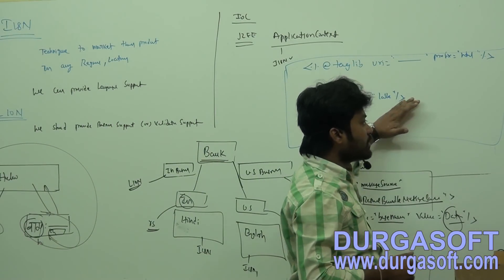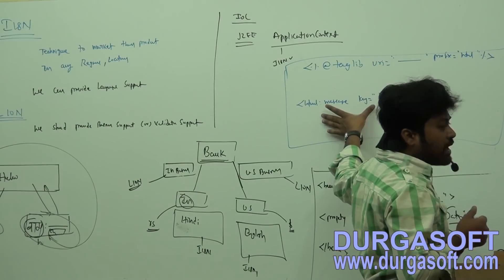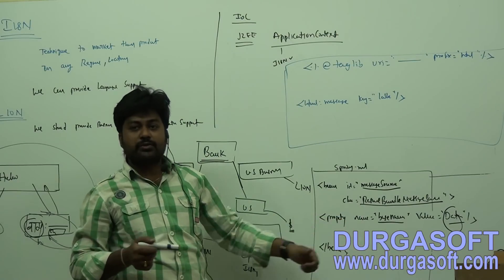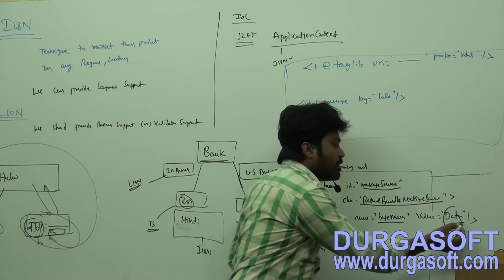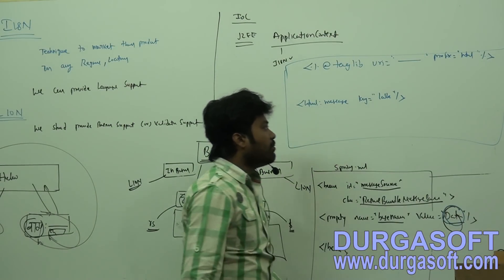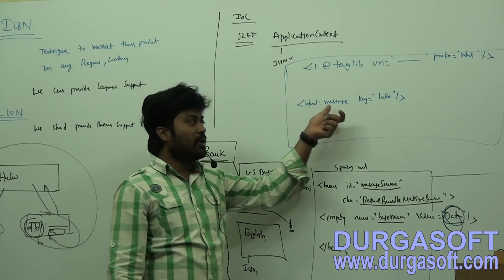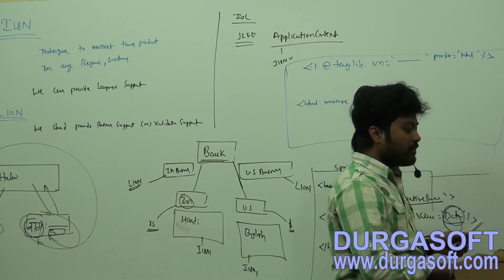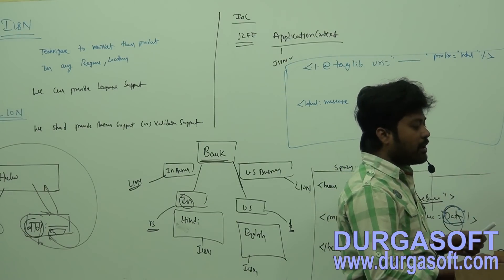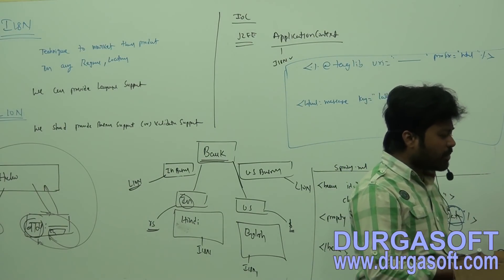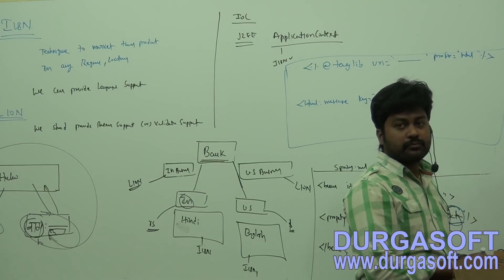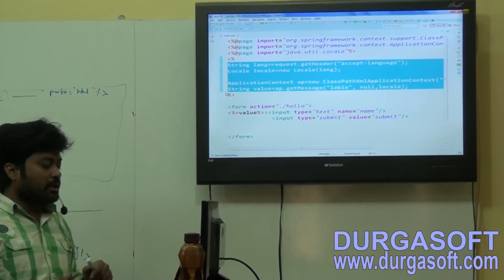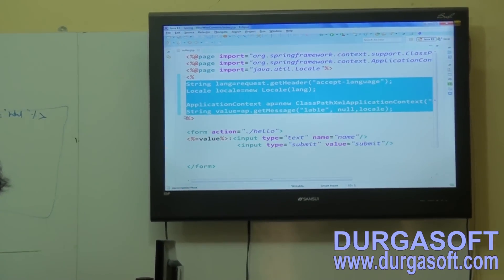So for MVC applications, for MVC applications, we have tags support. But this tags, how to get that base name by using resource bundle message source. So from here, we have to supply properties file base name. Then this message tag, internally, it will apply the same type of code. It will read browser language, after reading browser language, it will prepare a local object. And internally, the same implementation style it will follow. This simple tag library, you no need to write this much code. In case of MVC, I will show you, okay.